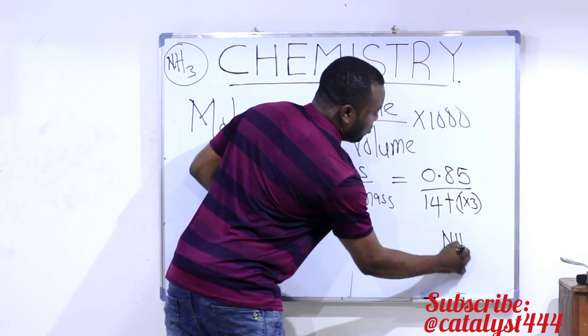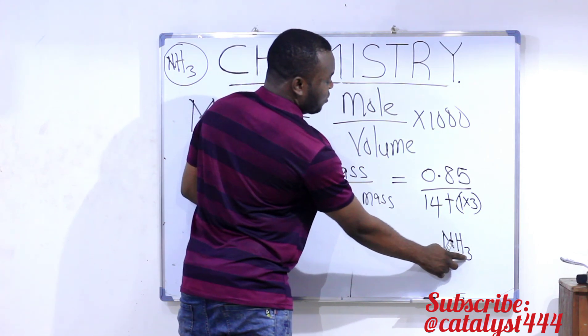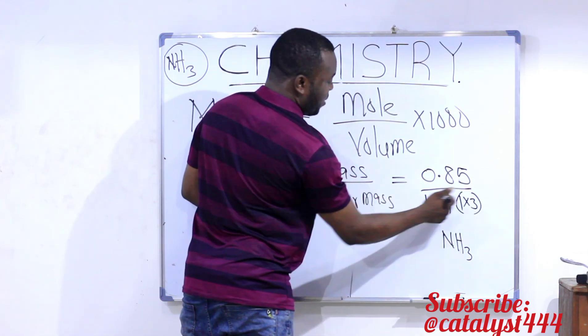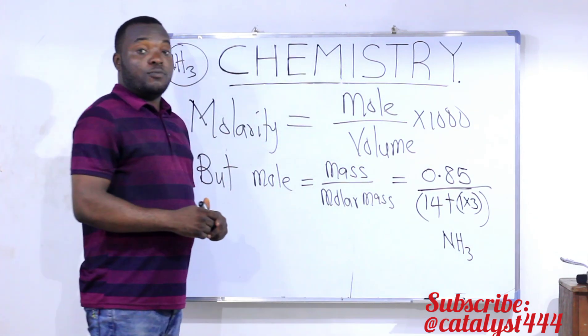Remember, ammonia is NH3. 1 nitrogen, which is 14. 3 hydrogen atoms, which is 1, multiplied by 3. So this is the molar mass. All we are trying to get is the mole.